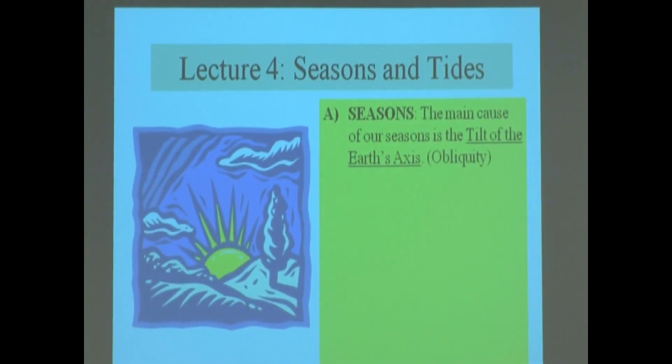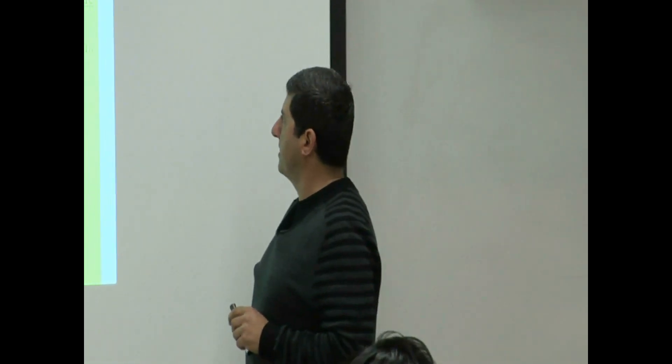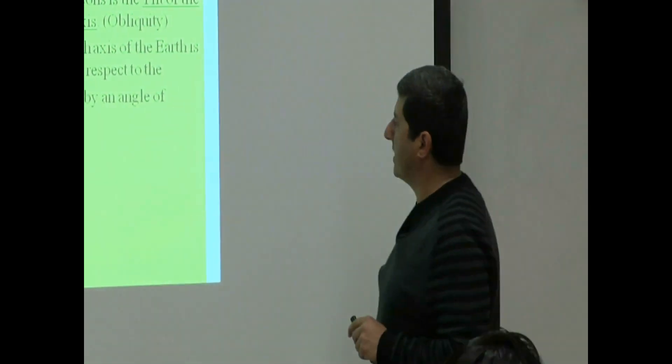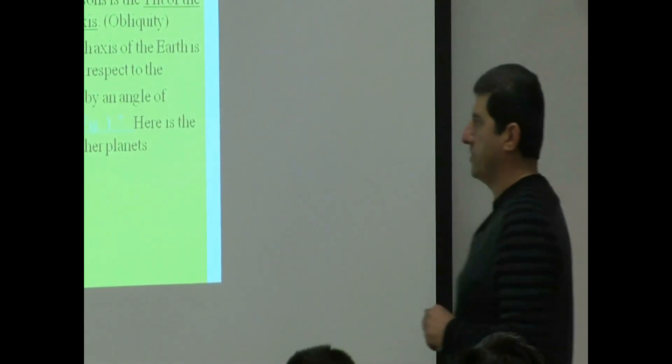Seasons. The main cause of our seasons is the tilt of the Earth's axis, also known as its obliquity. The north-south axis of the Earth is tilted with respect to the vertical plane by an angle of 23.5 degrees.